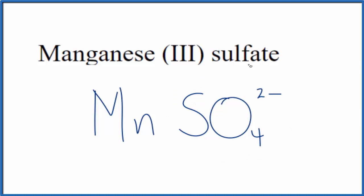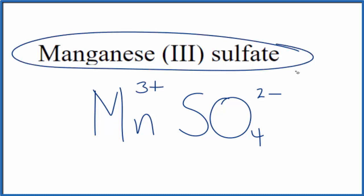So the sulfate ion, that's 2- here. Manganese, this Roman numeral III means that's 3+. And since this is a neutral compound, we don't see the word ion after it. These charges need to add up to zero.